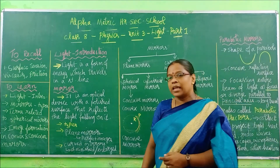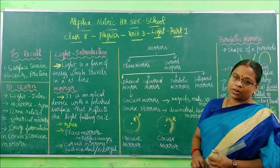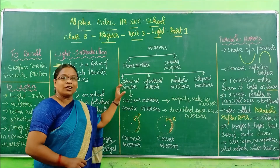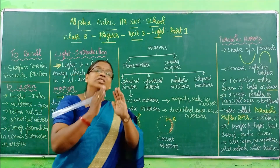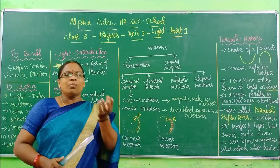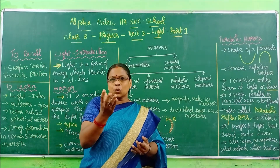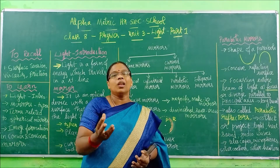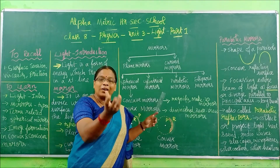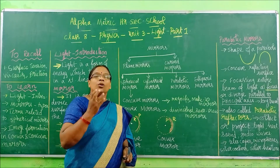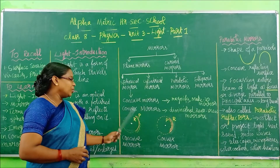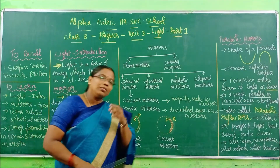Spherical mirrors have two types: concave mirrors and convex mirrors. Why the word 'spherical' mirrors? These mirrors look like they form a part of a sphere — like a ball shape. From a ball, if you cut a piece, one small piece you will get. These mirrors look like a part of a spherical shape, a spherical glass object. That is why they are named spherical mirrors.